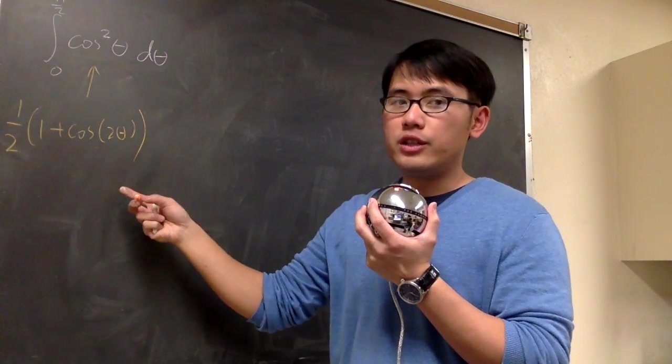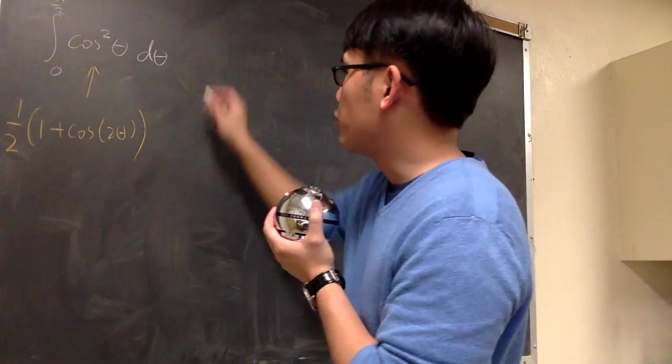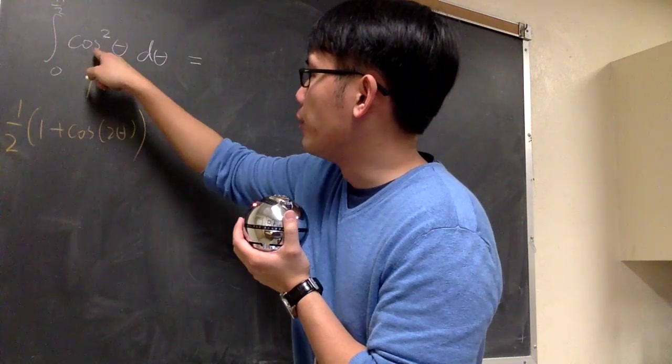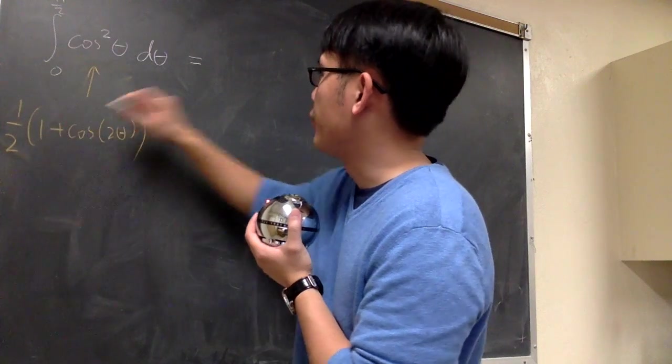And this is going to be much easier to integrate. So we'll make that replacement first. The 1 half will be inside, but then the number, we can bring that outside.